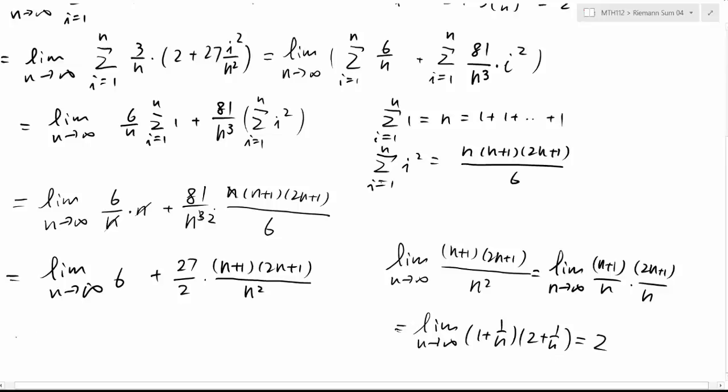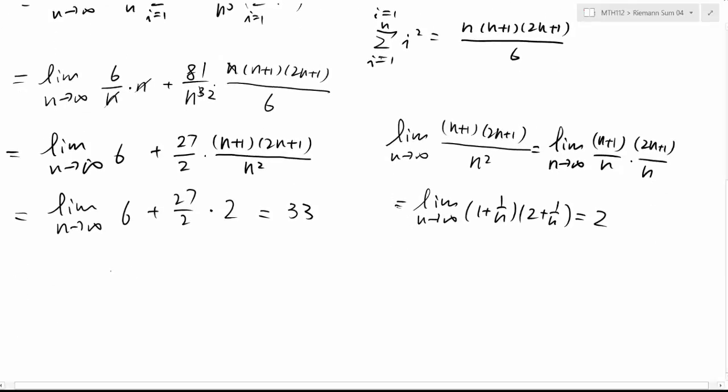So that's what we have. Now we put all these things together. We have n going to infinity, 6 plus 27 over 2 times 2. This limit is just a constant now, so we have 33 as the final answer. And so what we have eventually is from 0 to 3, (2 plus 3x squared) dx equals 33.